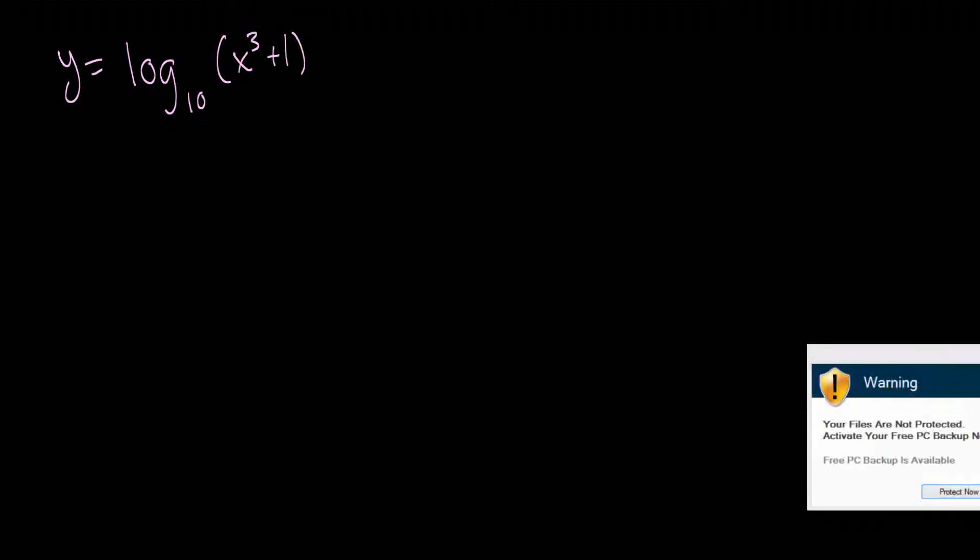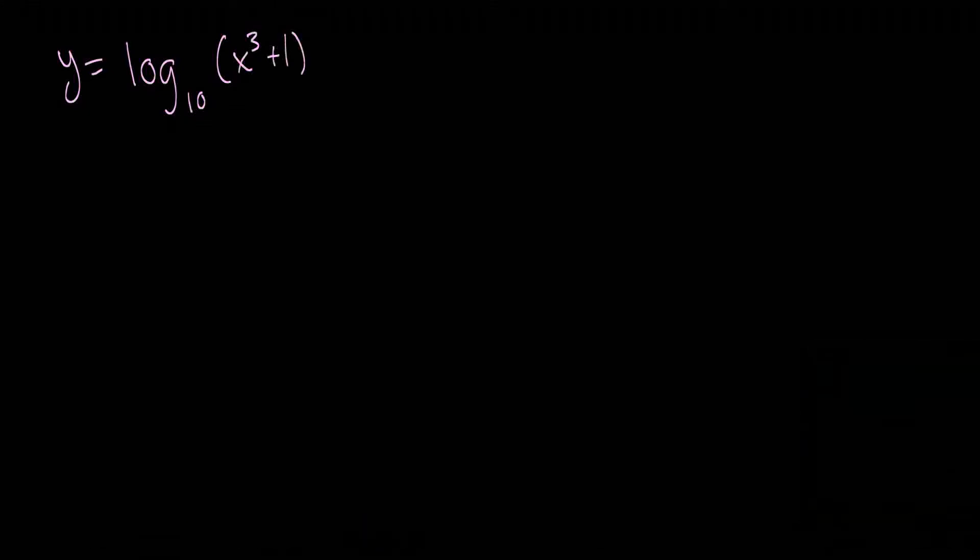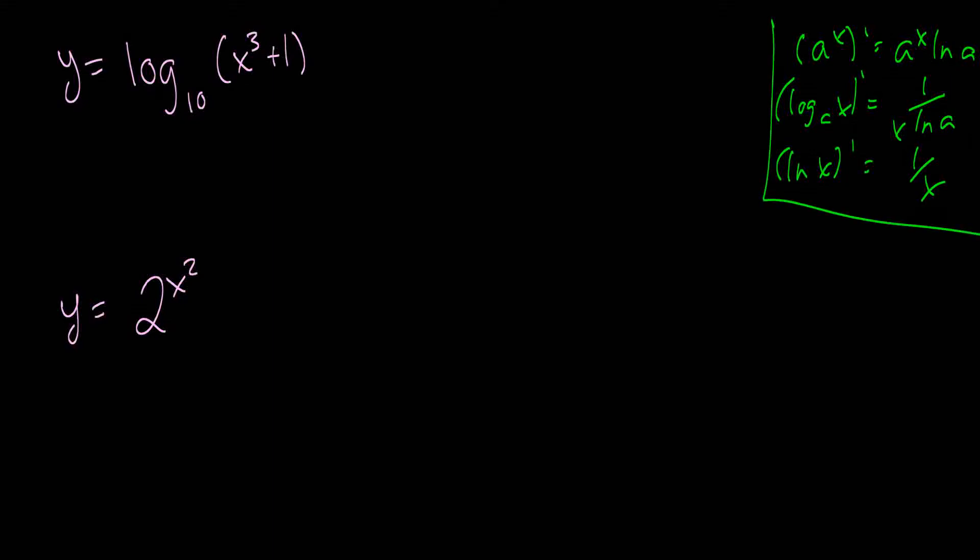And the second one is y is equal to 2 to the x squared. And I will write these rules again. So, the derivative of a to the x is a to the x ln a, the derivative of log base a of x is equal to 1 over x ln a, and the derivative of ln x is equal to 1 over x. So, use this information, see if you can figure out the problems, and we'll be back in just a second.